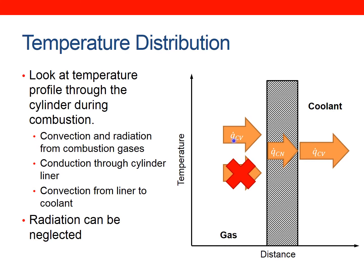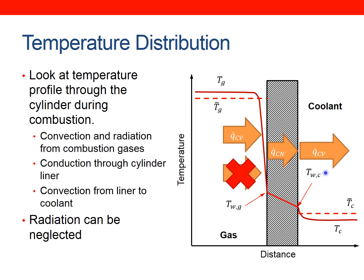Looking at the temperature profile: on the gas side we have a very high gas temperature that decreases non-linearly through the thermal boundary layer to the wall temperature — the temperature of the gas at the wall equals the wall surface temperature. Then the temperature decreases linearly through the wall, governed by the thermal conductivity of the material, to the wall temperature on the coolant side. Then there's another non-linear convective temperature profile down to the temperature of the coolant. There will be a tutorial where you'll work out wall temperatures and heat flows.